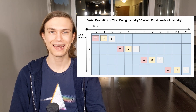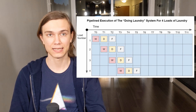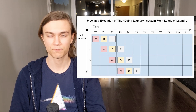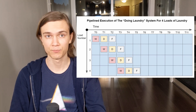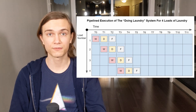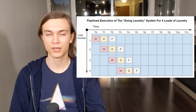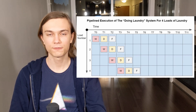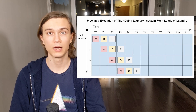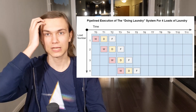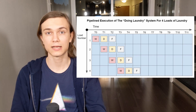Let's see how a pipeline execution of the system looks. We overlap the independent stages in the doing laundry process. At time t1, we have the first load drying and the second load washing. At time t2, we have the first load getting folded, the second load drying, and the third load washing. Then at time t3, the first load is completely done being processed, and the next load will be done at time t4. Assuming each stage takes 30 minutes, it would only take 3 hours to do 4 loads of laundry, instead of an entire 6.